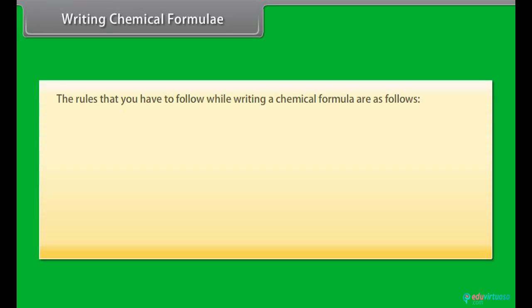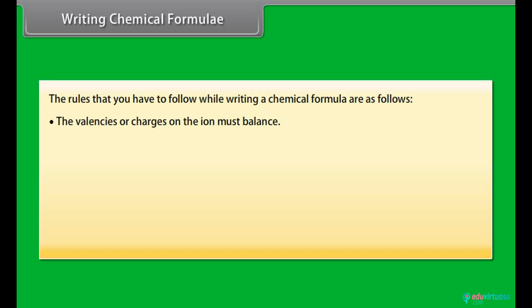The rules that you have to follow while writing a chemical formula are as follows. The valencies or charges on the ion must balance. When a compound consists of a metal and a non-metal, the name or symbol of the metal is written first.